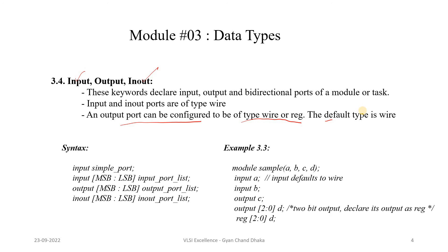Whether to use wire or register for an output port depends on the design and how we write the HDL code. As mentioned previously, in procedural blocks the left-hand side variable of an expression always has a register data type. For example, when modeling a multiplexer using behavioral modeling style, the multiplexer output needs to be declared as a register data type.